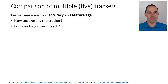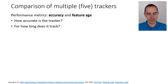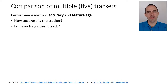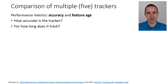There are many metrics we could devise to compare trackers, and here we look at two: accuracy and feature age. Accuracy answers the question of how accurate a tracker is, which requires ground truth of where features are. Feature age answers how long the tracker can track a feature — whether it's a few seconds or half a second.